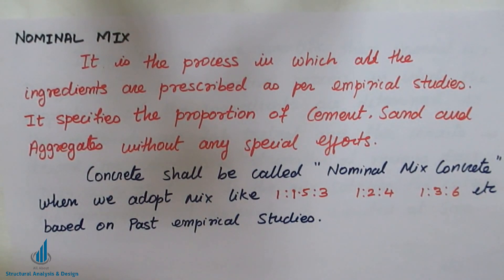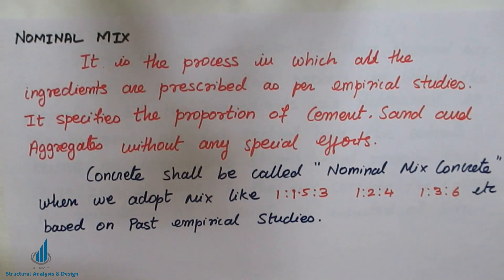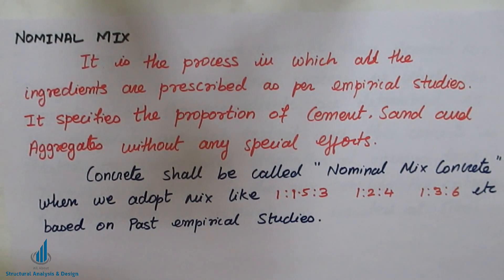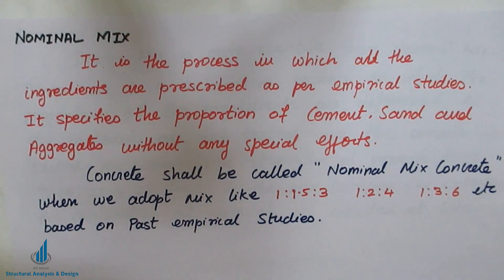The advantages of nominal mix are: it is easy to implement on site because no special efforts or additional data are required. Time consumed is less — with these proportions you can make concrete and start concreting work quickly. Also, skilled persons are not required; any laborer can do this directly with the help of these ratios and concreting work can be started immediately.